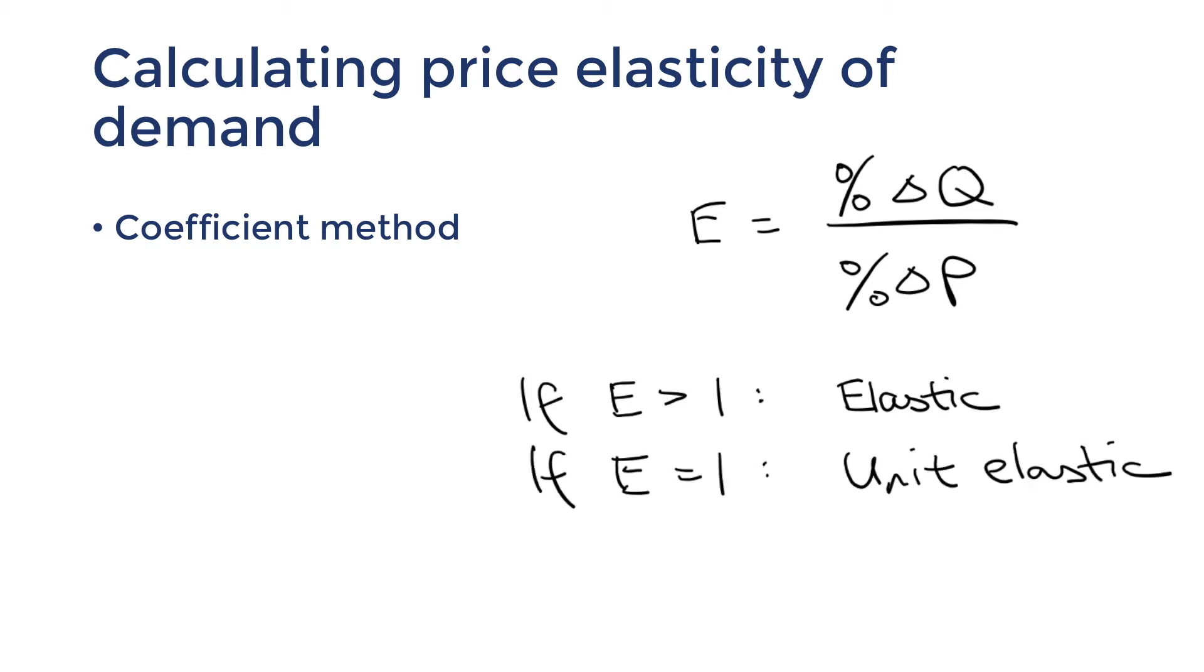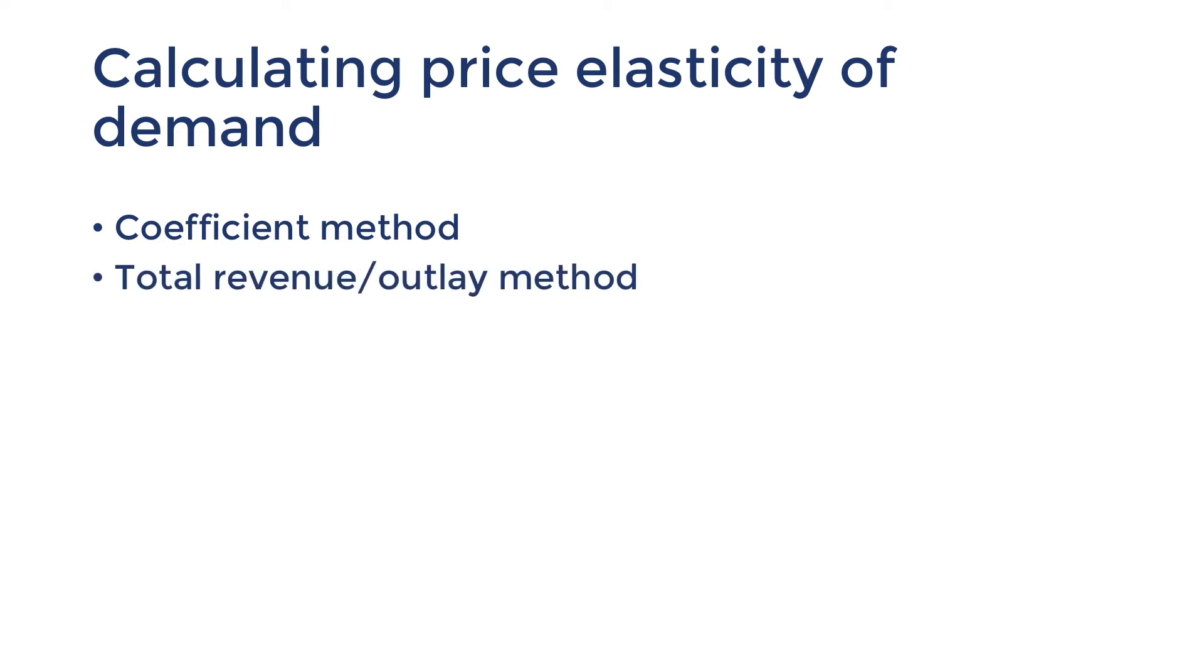If it's one it's unit elastic. If it's lower than one it's inelastic. Because this method is no longer in the current syllabus I'd like to move on and spend more time in the next method called the total outlay method or total revenue method.